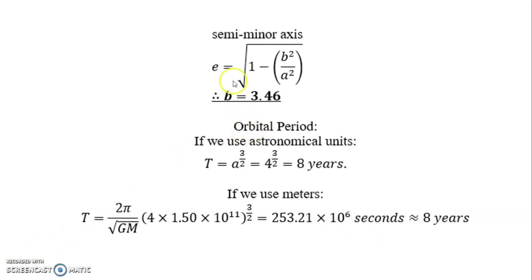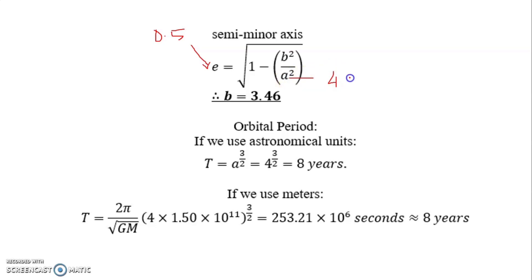To calculate the semi-minor axis, we substitute into this equation. The eccentricity e is equal to 0.5 and the semi-major axis a is 4 AU. We substitute into the equation. To remove the square root, we just square both sides.